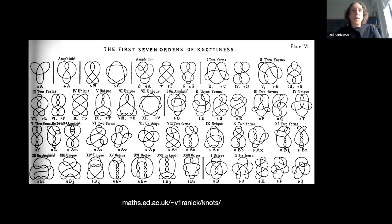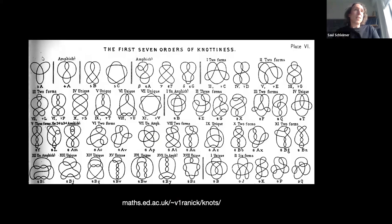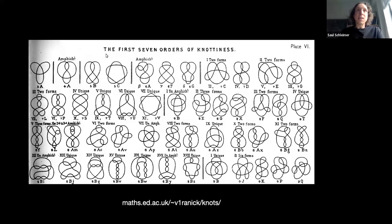My next slide is another illustration moving slightly further towards modern: this is Tait's first tables of knottiness. The unknot is missing, and he doesn't write down the crossings because at this point in time he thought that maybe all knots were alternating, so there was no need for the over-and-under convention. I think the title here is a pun — 'The First Seven Orders of Knottiness.'